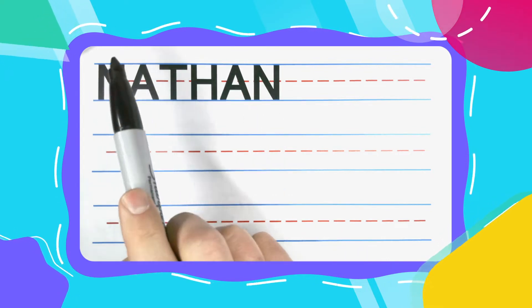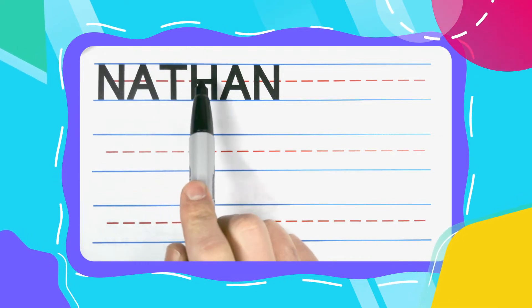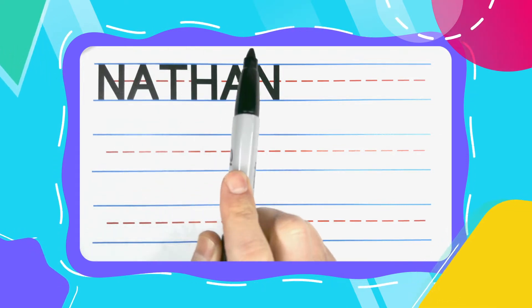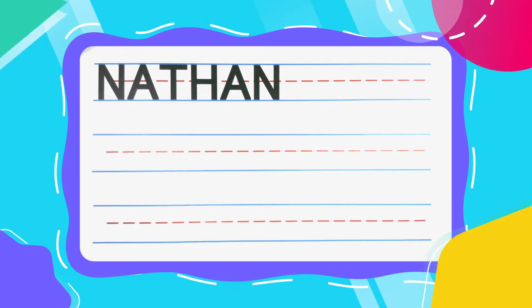Nathan is spelled N-A-T-H-A-N. That's one, two, three, four, five, six big letters written all in a row.